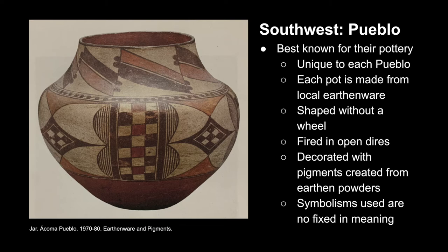Next we have the Pueblo people, who were best known for their pottery. Each Pueblo has its own distinct style, and the example we see here is from Acoma. These jars were made from local earthenware and were shaped without using a pottery wheel. After that, they are fired in an open fire and decorated with earthen-powdered pigments. The symbolisms throughout the mark-making don't have a fixed meaning; instead, they reference the forces of nature and community life.